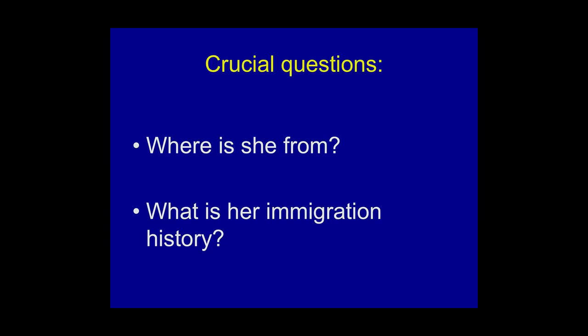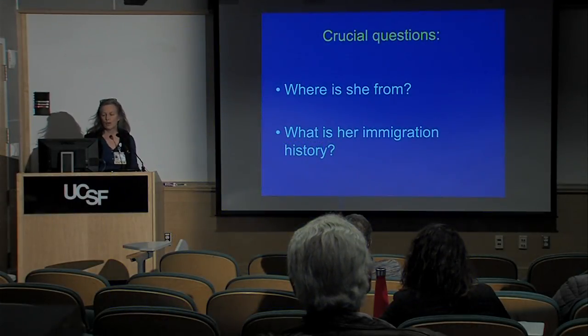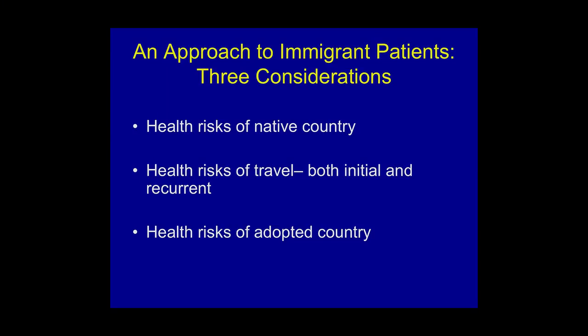One of the things I hope you've learned is that we think so much about risks. When taking care of a patient with a history of immigration, we must think about all of their risks. Here's one way of categorizing them: what are the health risks of their native country, what are the health risks of their travel, and what risks do they assume once they come to the United States?